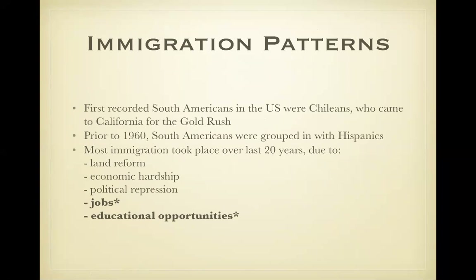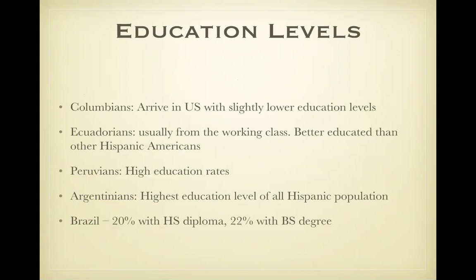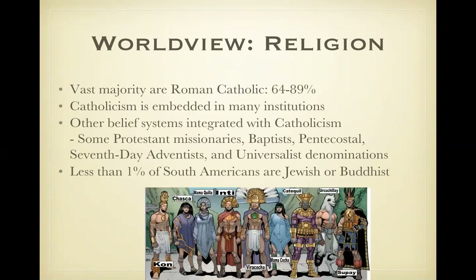Immigration patterns. The first recorded South Americans in the U.S. were Chileans who came to California for the gold rush. There were also many immigrants coming to work in the mines, and jobs and education were the primary reasons for immigration. Current demographics: South American populations in the U.S. have nearly doubled since the year 2000. Education levels: Colombians typically have lower education levels. Ecuadorians usually come from the working class and are better educated than other Hispanic Americans but have lower education levels compared to people from the United States. Argentinians have the highest level of education of all Hispanic populations. Brazilians have 20% with a high school diploma and an additional 22% with a bachelor's degree, which is higher than the U.S. average.